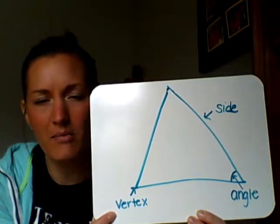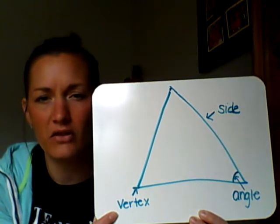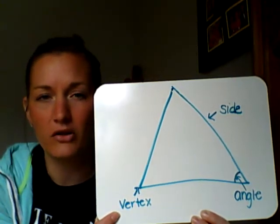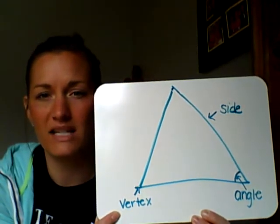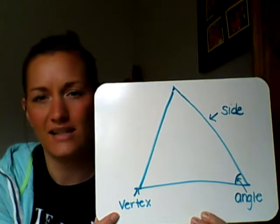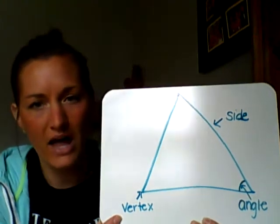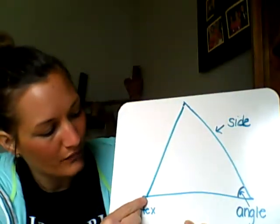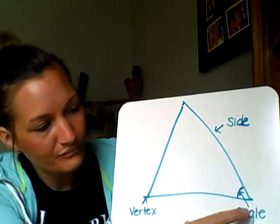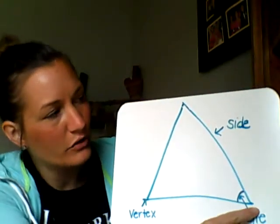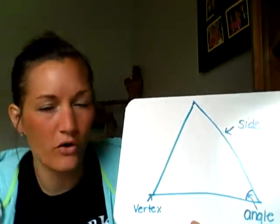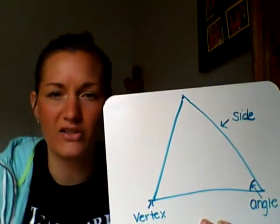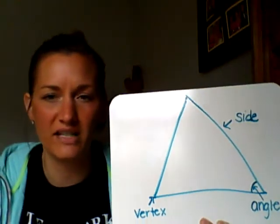So if we look at this shape, how many vertices — when it's plural we say vertices — how many vertices does this shape have? Do we count? One, two, three. So the triangle has three vertices.